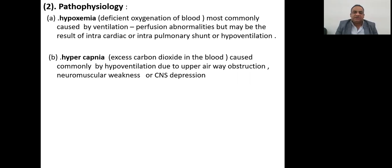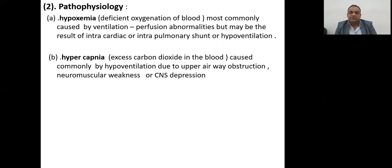Pathophysiology: we have hypoxemia, which means deficient oxygenation of the blood, most commonly caused by ventilation-perfusion abnormalities, but may result from intracardiac or intrapulmonary shunt or hypoventilation. Hypercapnia means excess carbon dioxide in the blood, commonly caused by hypoventilation due to upper airway obstruction.